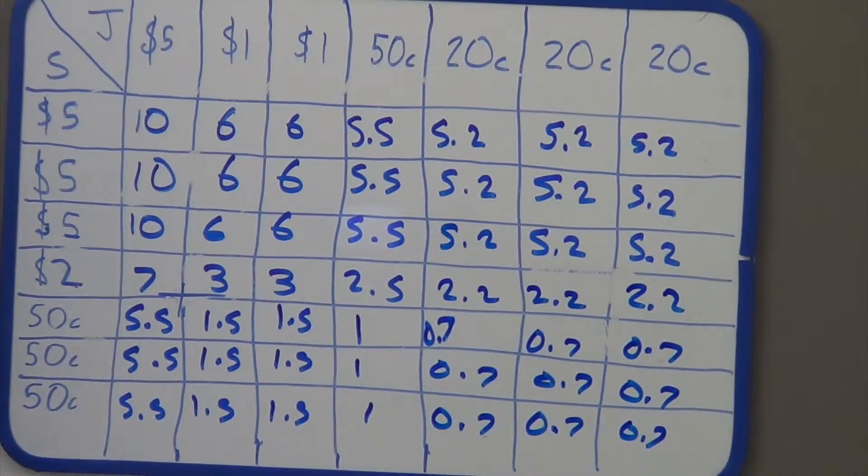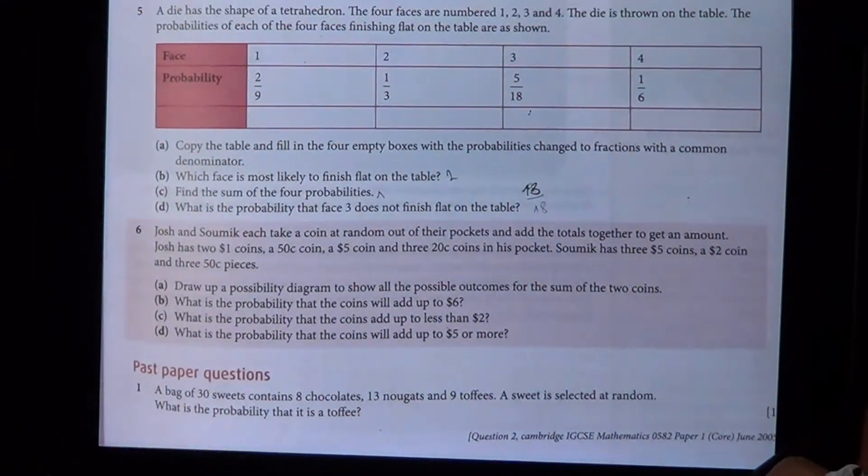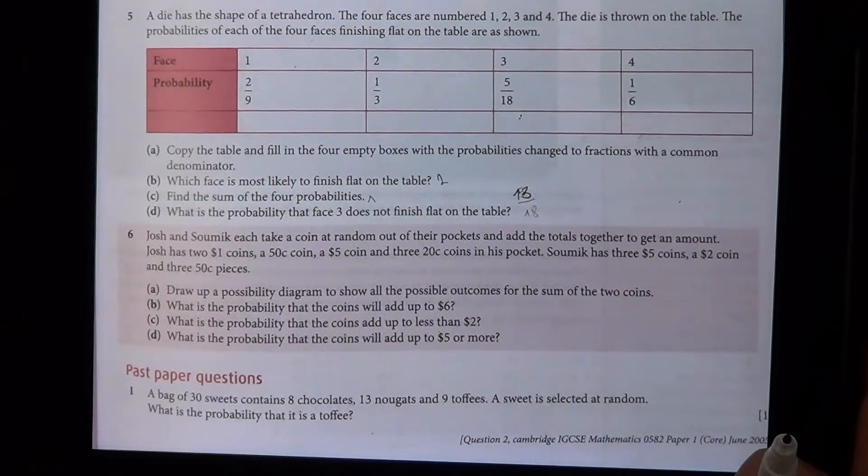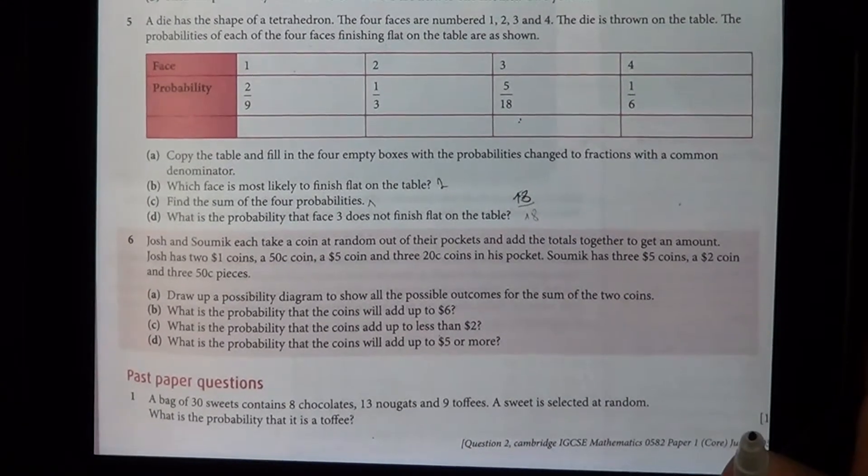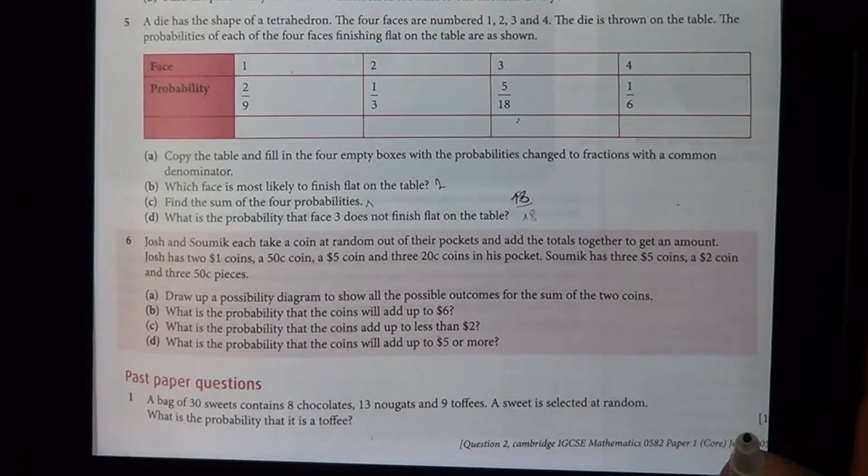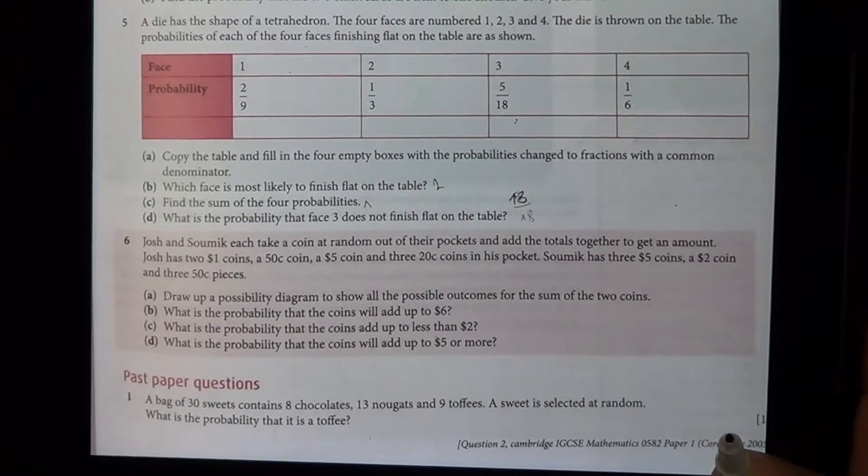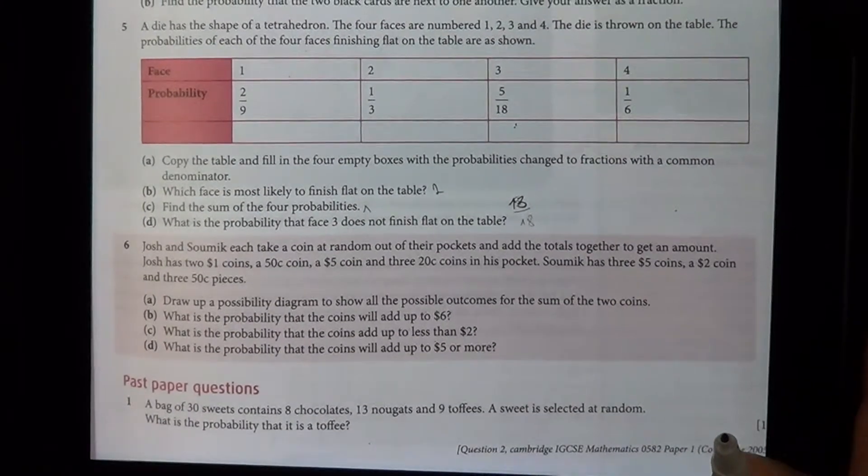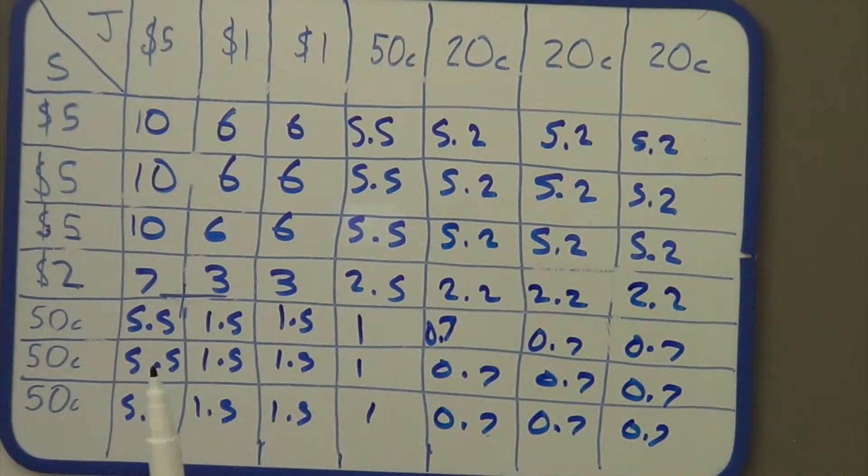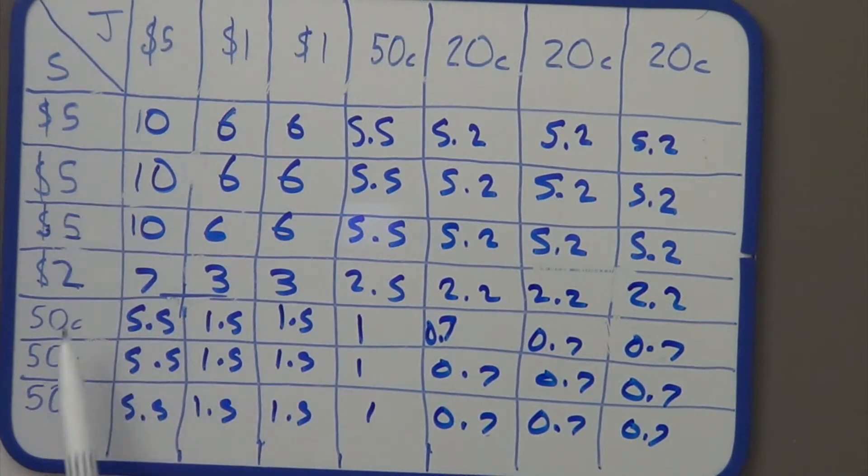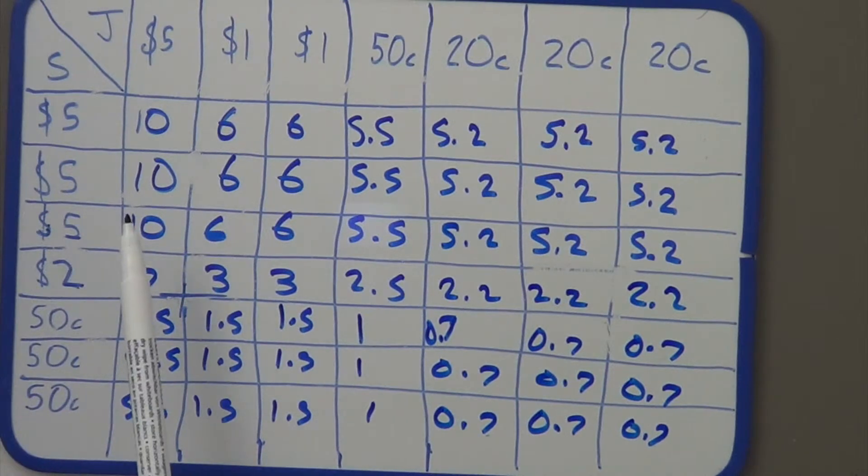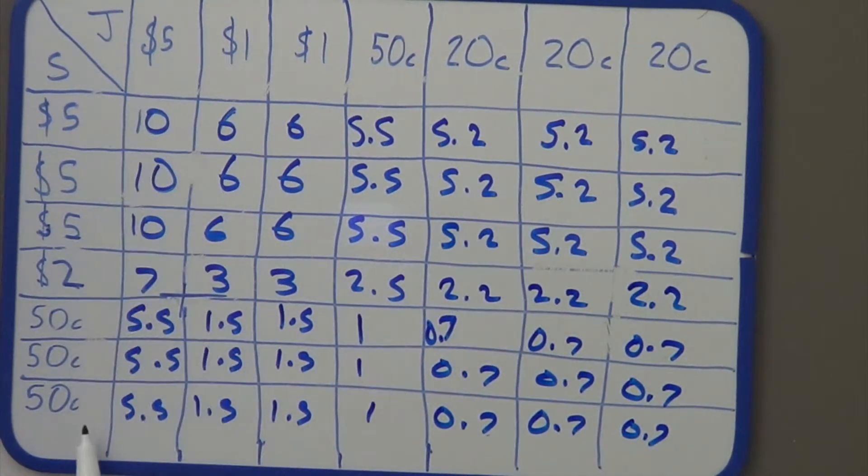Now, this next question, it says, Josh and Salmik take a coin at random out of their pockets and add the totals together to get an amount. Josh has two $1 coins, a $0.50 coin, a $5 coin, and three $0.20 coins in his pocket. Salmik, on the other hand, has three $5 coins, a $2 coin, and three $0.50 pieces. And the first question is, draw up a possibility diagram to show all the possible outcomes for the sum of the two coins. Now, I have already done this for you. It is time consuming. Now, they could ask you this in the exam. So, just be aware that this is a possibility diagram and it's showing all the possible outcomes. So, Josh has got seven possible coins, and Salmik has also got seven possible coins. So, the total possible outcomes, or possibilities, is going to be 7 times 7, which is 49.